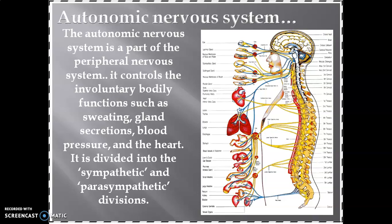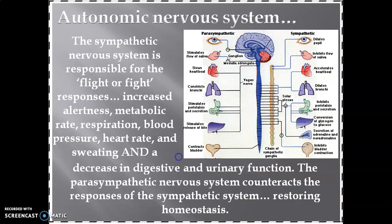The autonomic nervous system is a part of the peripheral nervous system whose role is involuntary. Its functions include sweating, gland secretion, blood pressure, and increasing or decreasing heart rate. It is divided into two types: the sympathetic and the parasympathetic nervous system.